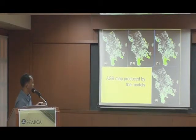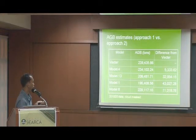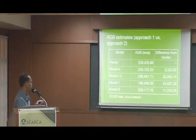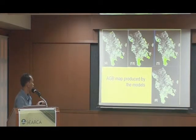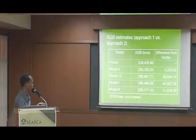We conducted a simple comparison based on above-ground biomass of the landscape between the vector technique and the other regression models. There is a problem with Model 4, as we are seeing a lot of high-biomass values at unexpected locations. The difference between the vector technique estimate and the other models is quite high but still acceptable. The vector technique may provide comparable estimates of above-ground biomass without the usual regression approach.